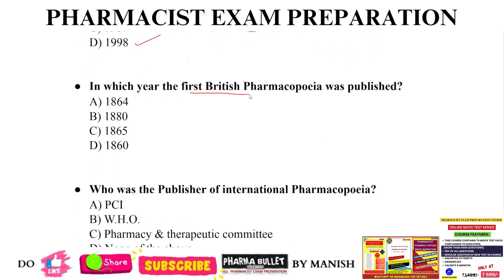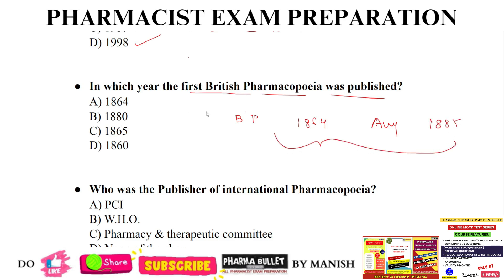In which year was the first British Pharmacopeia published? The first British Pharmacopeia was published in 1864. British Pharmacopeia is published every year in the month of August, and was made official in India from 1885. These are all previous year questions. The correct answer is option A, 1864. First Indian Pharmacopeia: 1955. First USP: 1820. First Japanese Pharmacopeia: 1890.